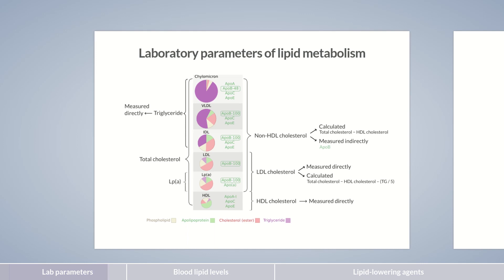The amount of lipoprotein(a), whose function isn't exactly known, is primarily genetically determined and remains basically constant throughout a lifetime. It's been shown to increase the risk of atherosclerotic cardiovascular diseases. As a laboratory parameter, lipoprotein(a) is only measured once if a genetically caused increase is suspected. By the way, chylomicrons don't really affect parameters measured in the fasting state — they only form shortly after food consumption and are quickly broken down again.